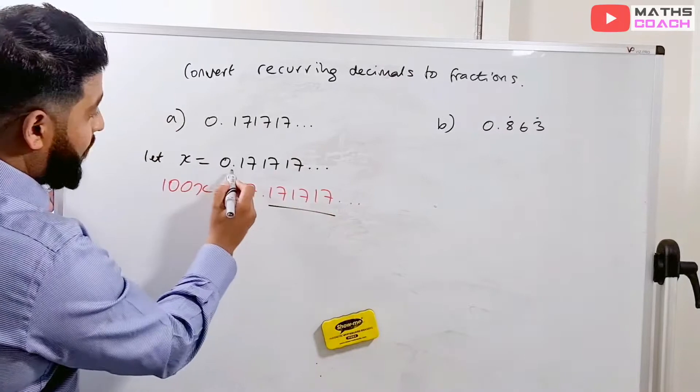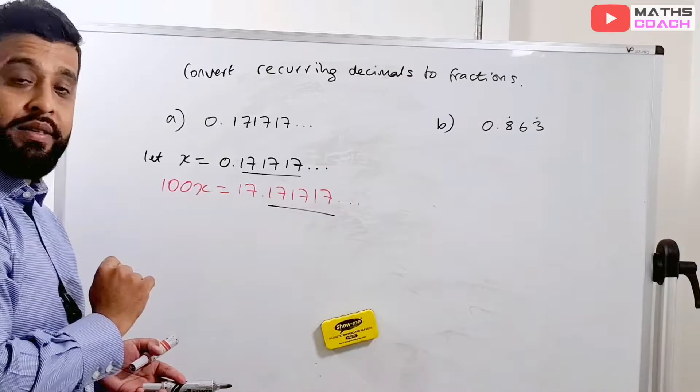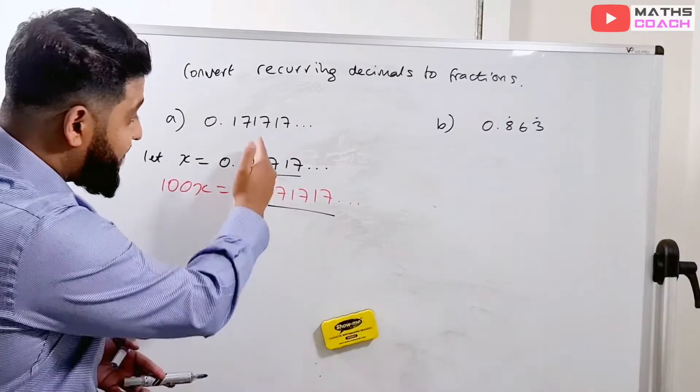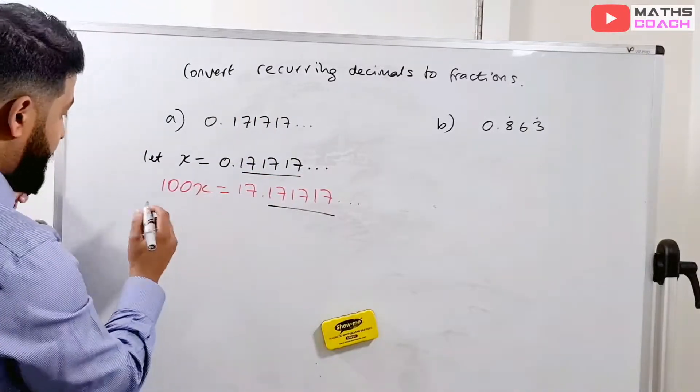So now can you see that after the decimal place on our 100x, it's exactly the same as what the original x was. So we can do 100x take away the x and same with the numbers. That's exactly what we're going to do because after the decimal place, when we take these numbers away, they will just cancel out. They will just disappear.